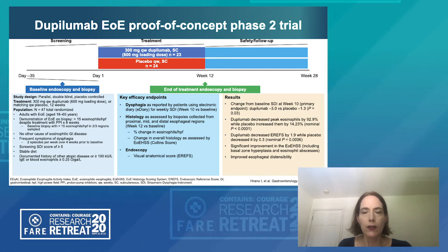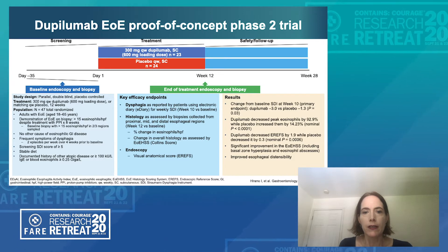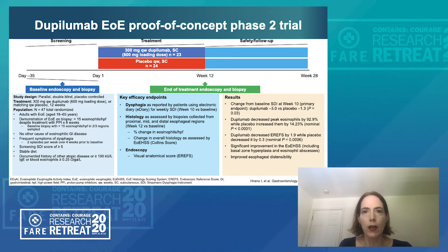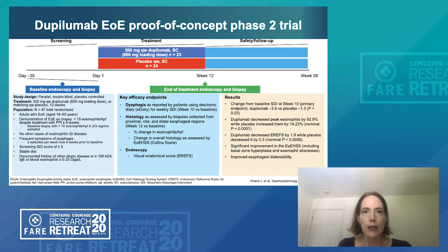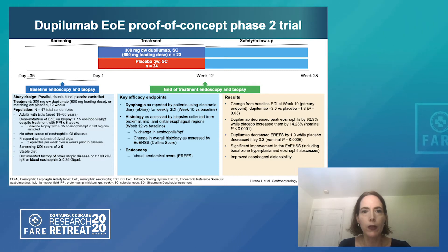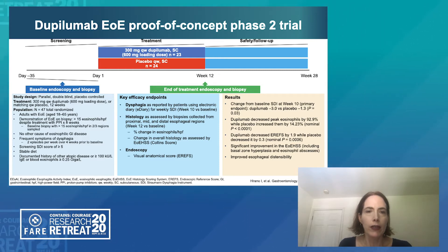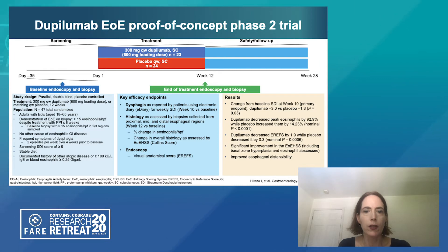There was also a marked improvement in esophageal distensibility plateau. For those patients on dupilumab, the esophagus actually became less hardened and more easily distensible compared to those patients on placebo treatment.